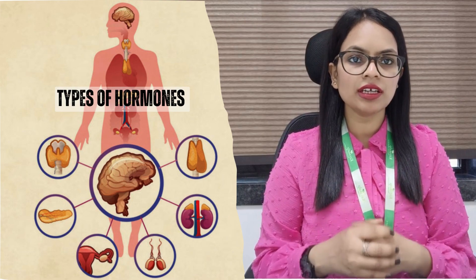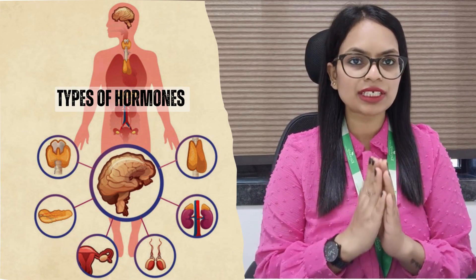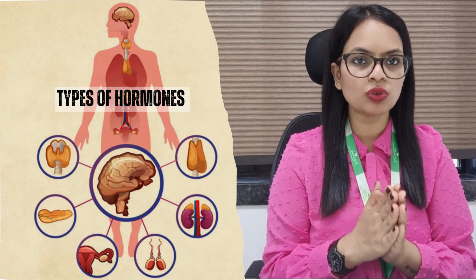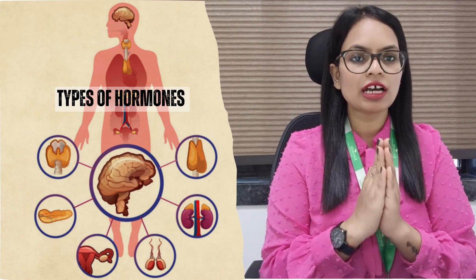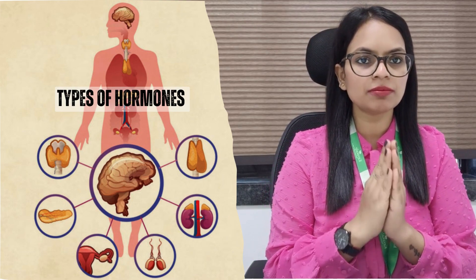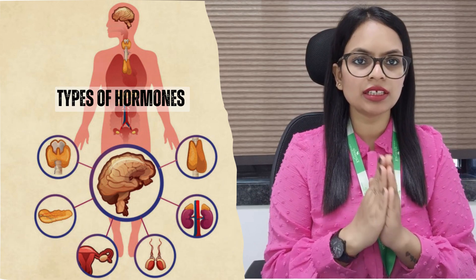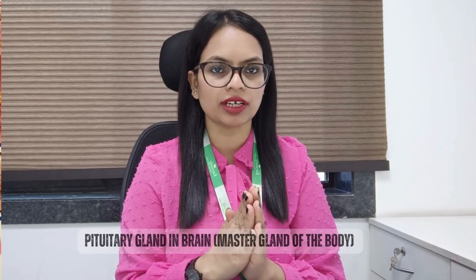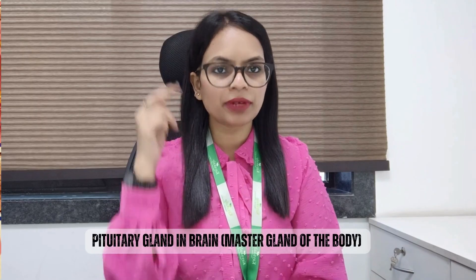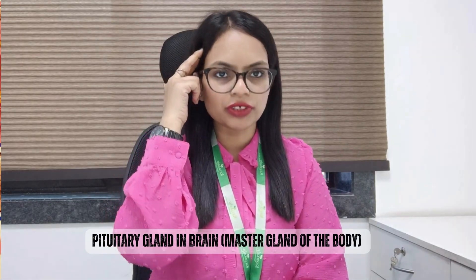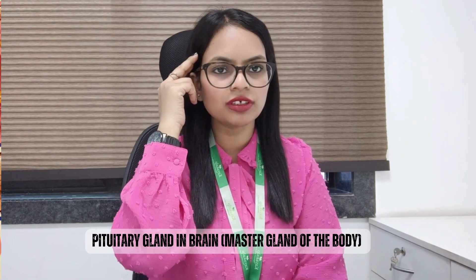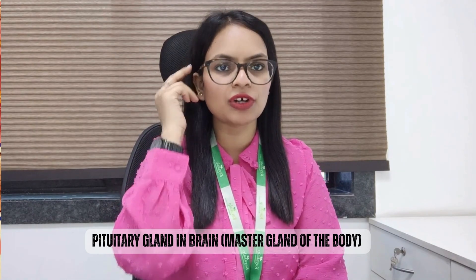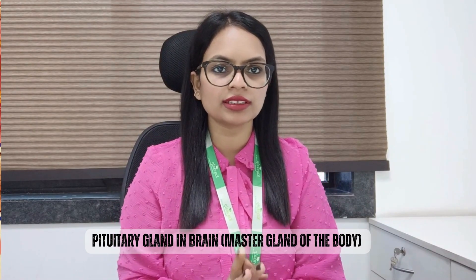Let's talk about the types of hormones. The types of hormones are different. How do hormones release? The brain has a pituitary gland. The pituitary gland helps hormone secretion in its functions.